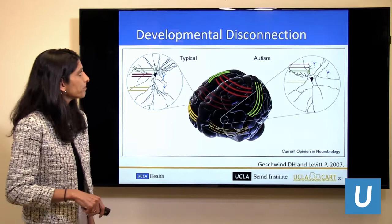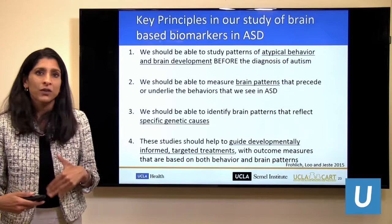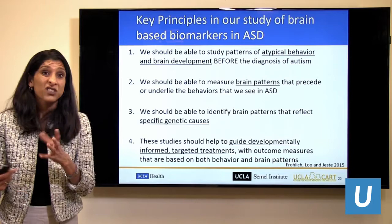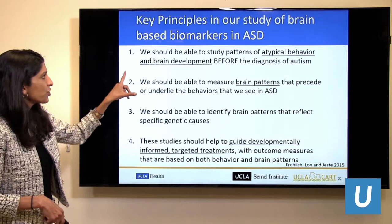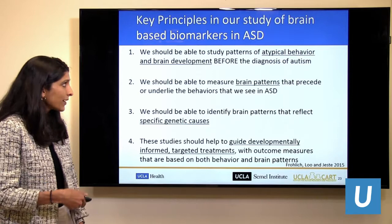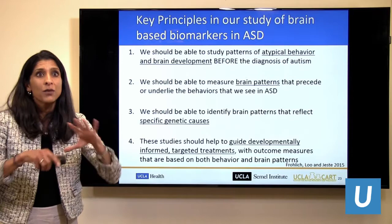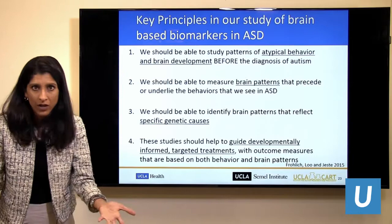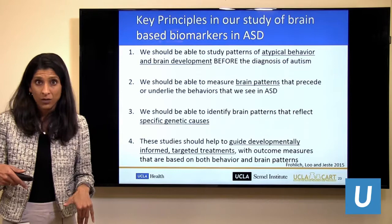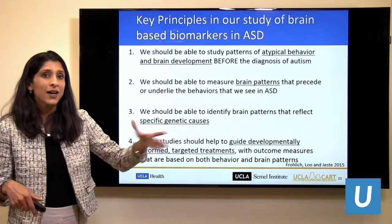Based on what we know about neurobiology, this is the scientific and clinical premise of our work at UCLA on biomarkers. We believe we should be able to study patterns of atypical brain development before autism is diagnosed, measure brain patterns that precede or underlie the behaviors we see, and identify brain patterns reflecting specific genetic causes — helping parse the heterogeneity in autism. Ultimately, the goal is to guide developmentally informed, biologically-based targeted treatments with outcome measures based on both behavior and brain patterns.